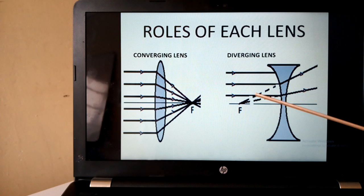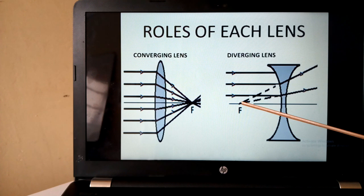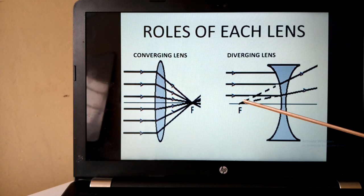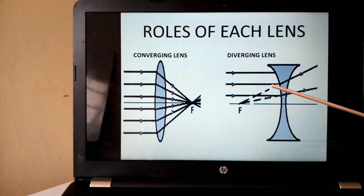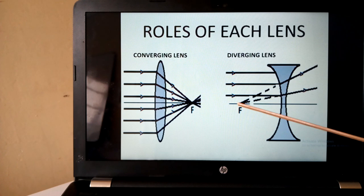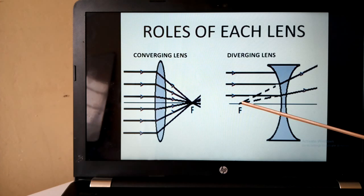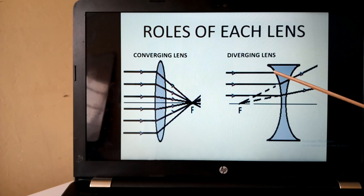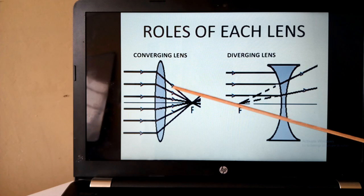Now when you extend backwards, you get the divergency seem to have come from here. Here it is important to note that these are the real rays, but the dotted are an idea that helps us to get the common point from which the divergency emanated. I have drawn for ray 1 and ray 2. I would like you to complete for this ray 3. So by definition and roles each play, you are able to distinguish what is a converging lens and what is a diverging lens.